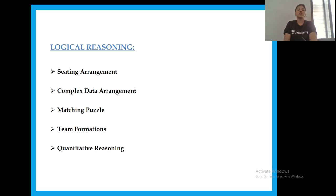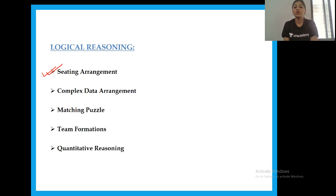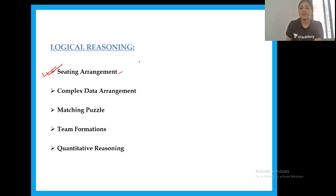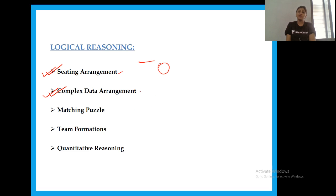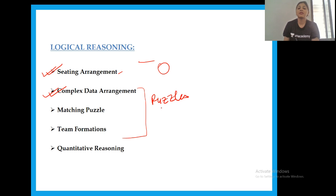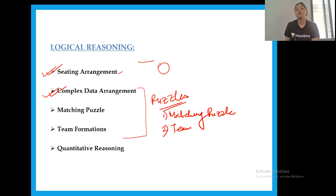Let's see the DILR syllabus. The first topic in Logical Reasoning is Sitting Arrangement, which can be of two types: linear and circular or cross-figure arrangement. Next we have complex data arrangement. Under puzzles, the first type is a Matching Puzzle.